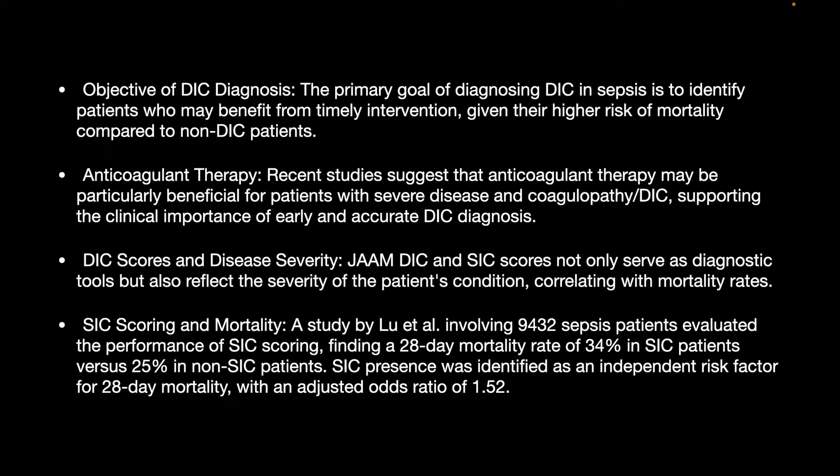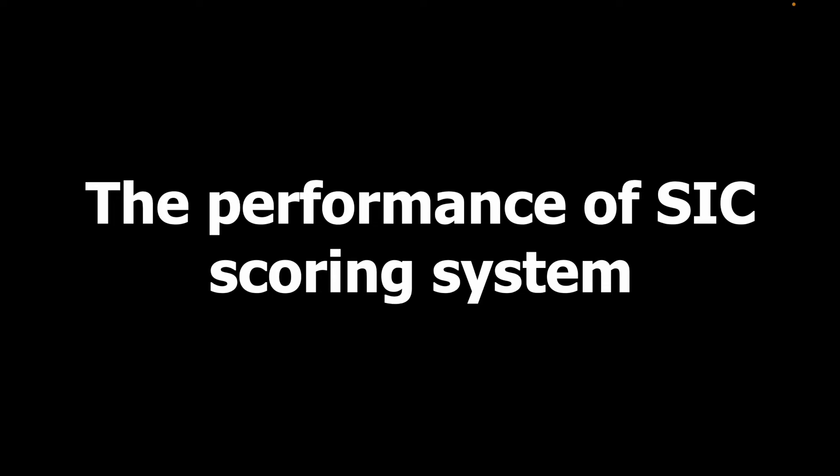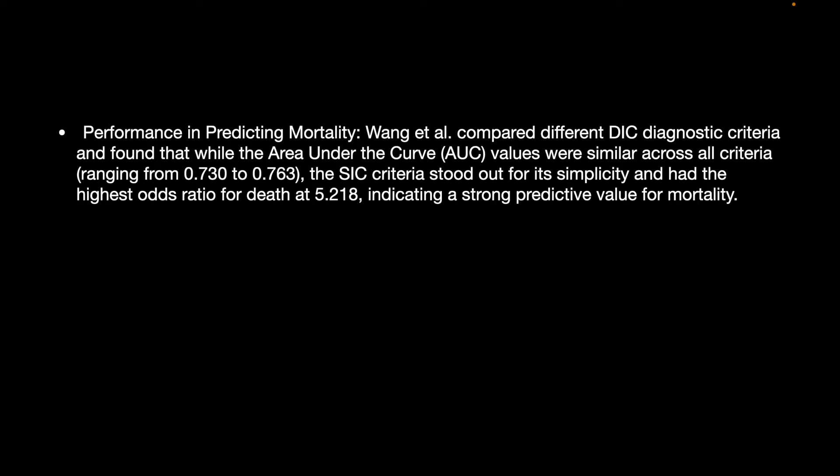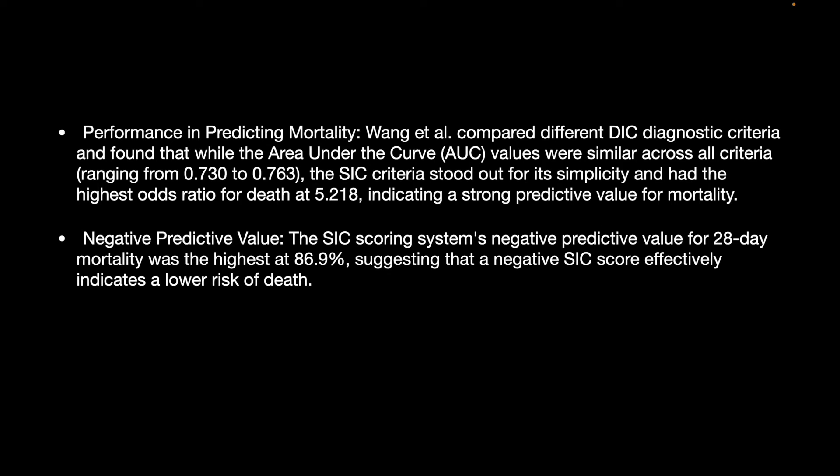JAM-DIC and SIC scores not only serve as diagnostic tools but also reflect the severity of the patient's condition, correlating with mortality rates. A study by Liu et al. involving 9,432 septic patients found a 28-day mortality rate of 34% in SIC patients versus 25% in non-SIC patients. SIC presence was identified as an independent risk factor for 28-day mortality with an adjusted odds ratio of 1.52. The Wang et al. study found that the SIC criteria stood out for its simplicity and had the highest odds ratio of 5.2% for predicting death, with a negative predictive value for 28-day mortality of 86.9%.